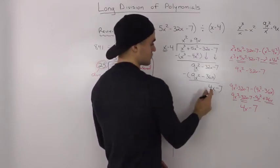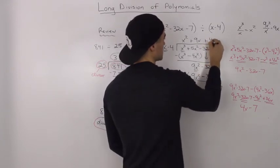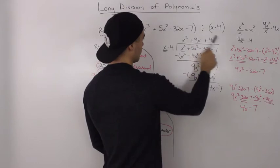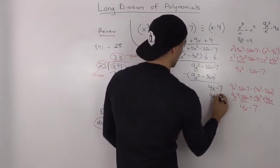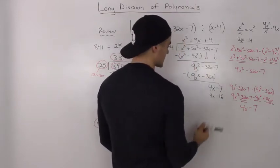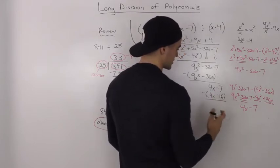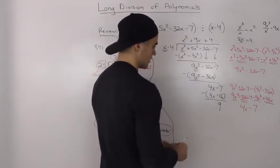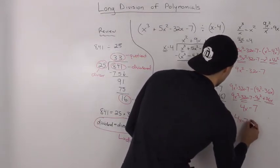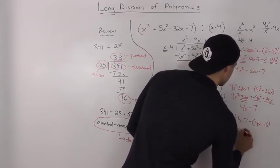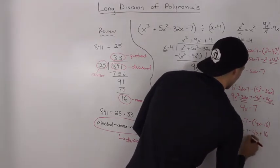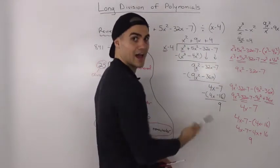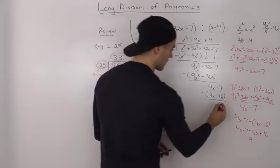Then we check how many times does x go into 4x. x goes into 4x just 4 times, because 4x divided by x is 4. So we write 4, and 4 times x minus 4 is 4x minus 16. When we subtract, 4x minus 4x is 0, and negative 7 minus negative 16 ends up being positive 9. So if we rewrite: 4x minus 7 minus (4x minus 16), distributing the negative gives 4x cancel out, and negative 7 plus 16 is positive 9. Since x minus 4 can't go into 9, the remainder is 9.